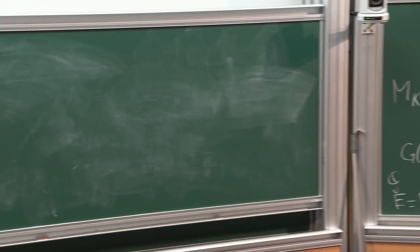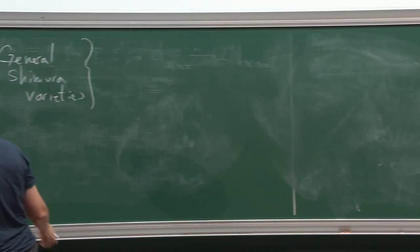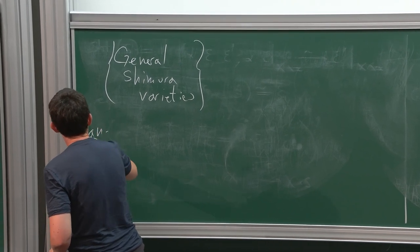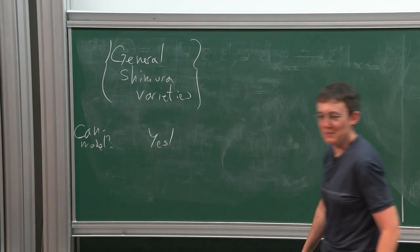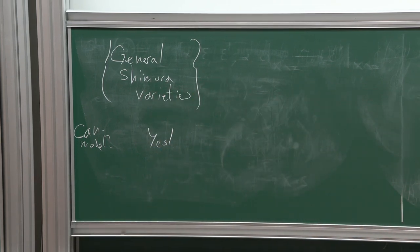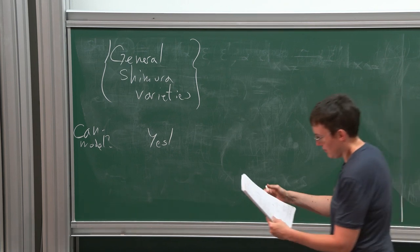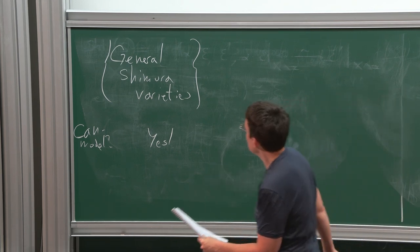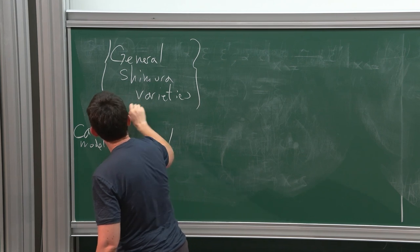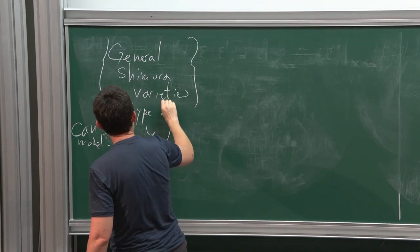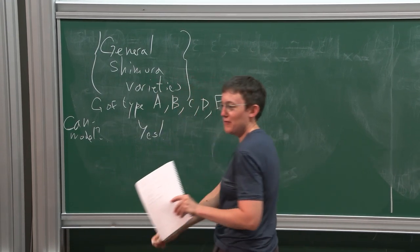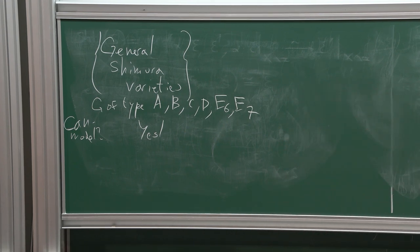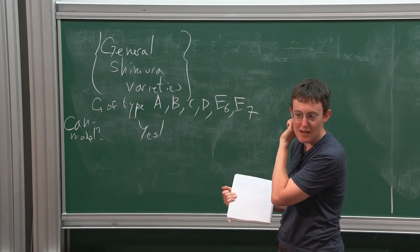I finished with the theorem that every Shimura variety actually has a canonical model. To come back to this: the groups that you can have are restricted. If you look at the list of possible types, you have A, B, C, D, E6, E7.